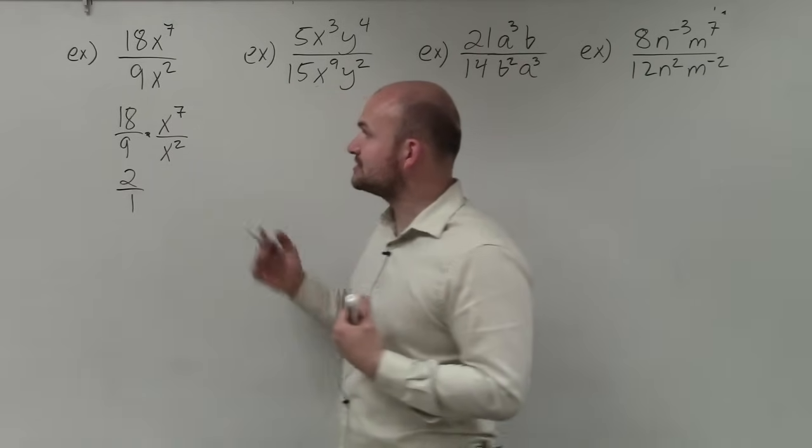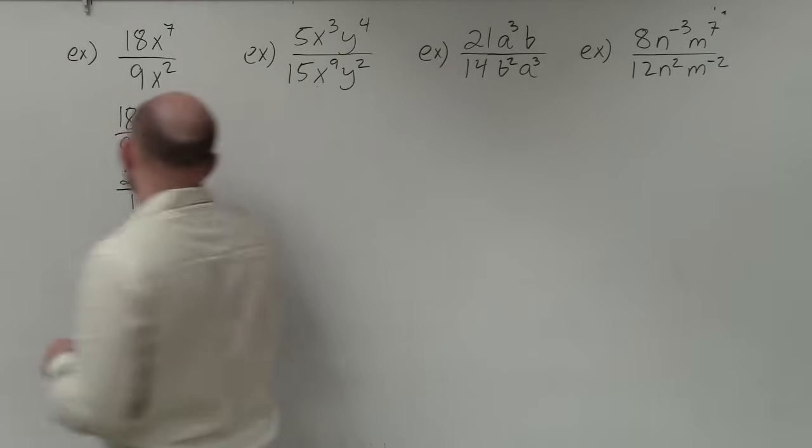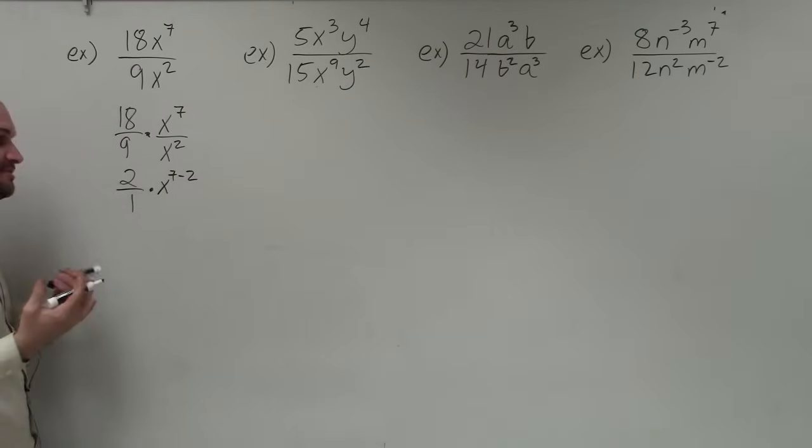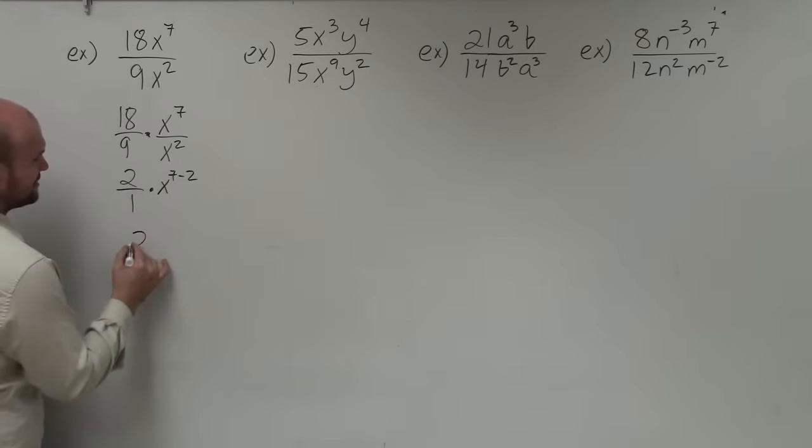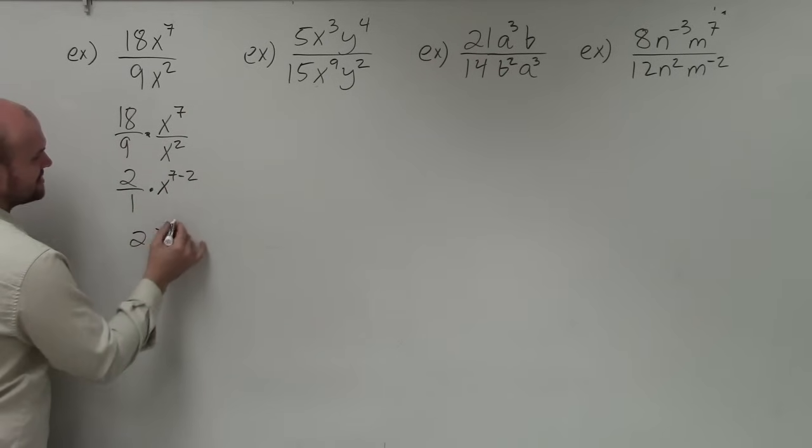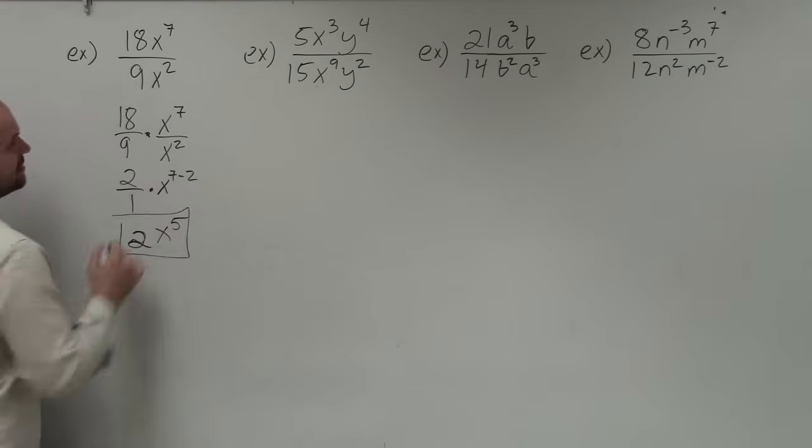Now, by using the rules of exponents, I have x to the seventh over x squared, so I'm going to use the quotient property, which is going to tell me to do x to the seventh minus 2. So I'm going to be subtracting them, which is going to leave me with 2 over 1, and x to the seventh minus 2 is going to leave me with x to the fifth. Now, those are both going to be in the numerator. So therefore, we don't really need to rewrite them over 1. So I'll just rewrite my finalized answer as 2x to the fifth.